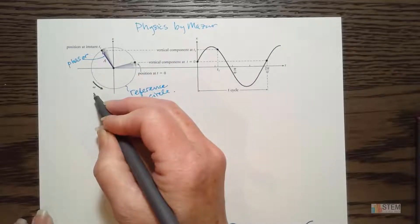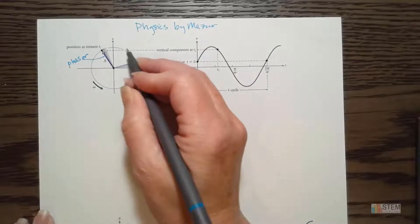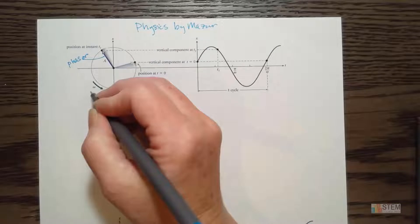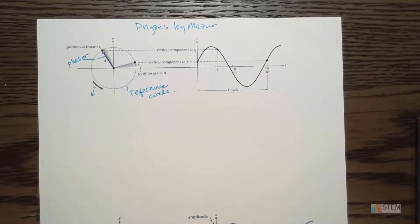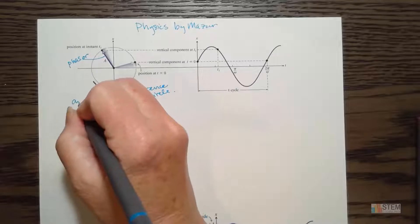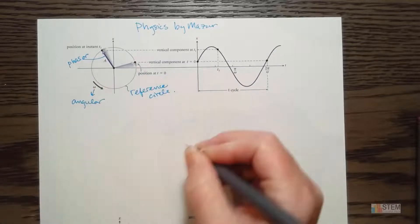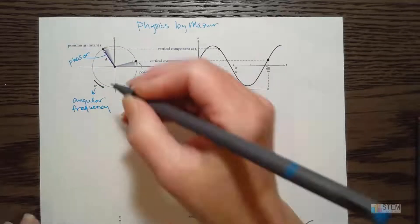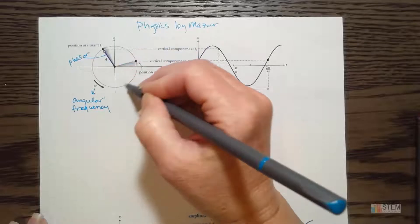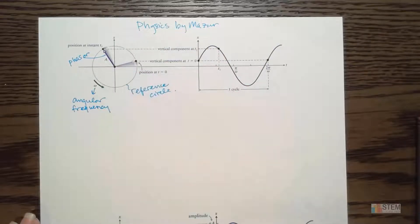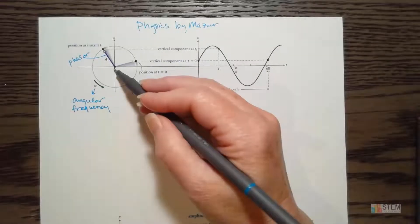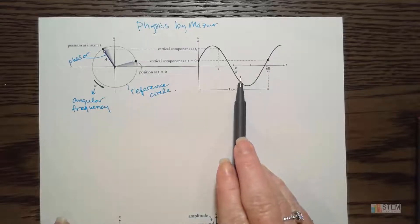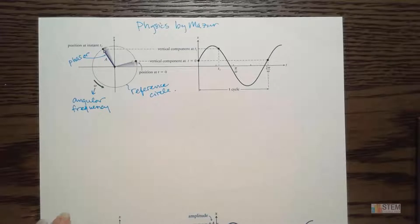This arrow has a name — it's called a phasor. The phasor basically goes around the circle. Notice we've got omega here. Omega is the speed at which we're going around in a circle. This term is called your angular frequency. So we've got this phasor going around the circle at that angular speed, and it's related over here on this sinusoid graph.